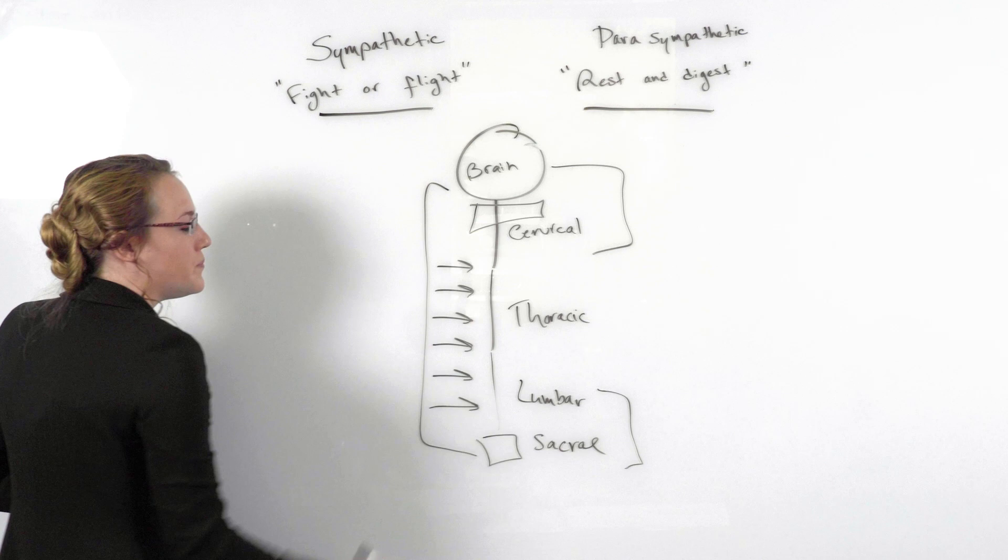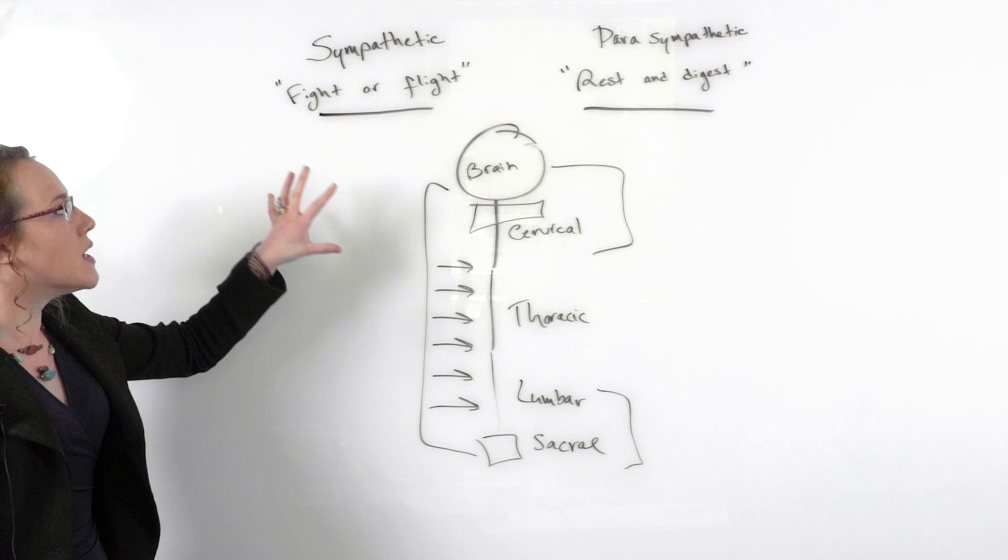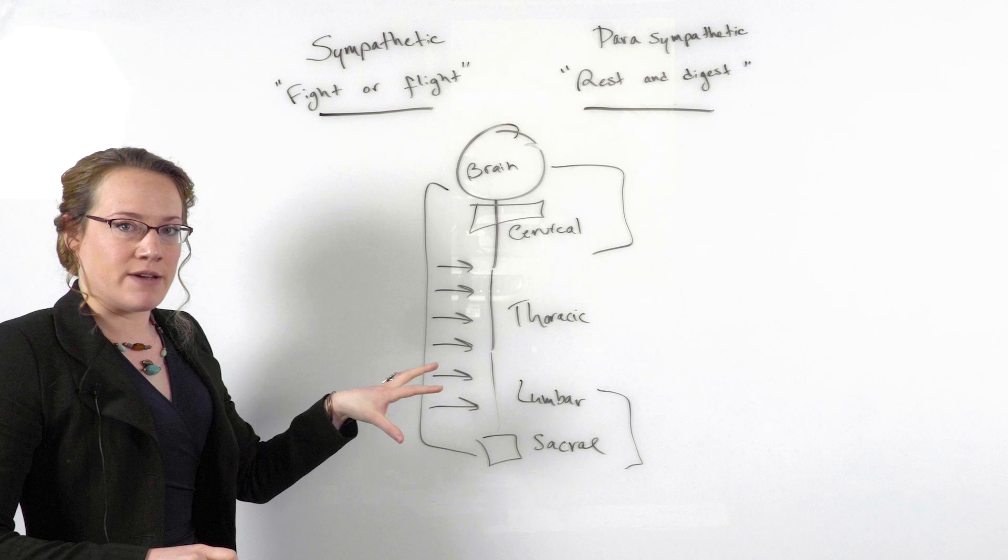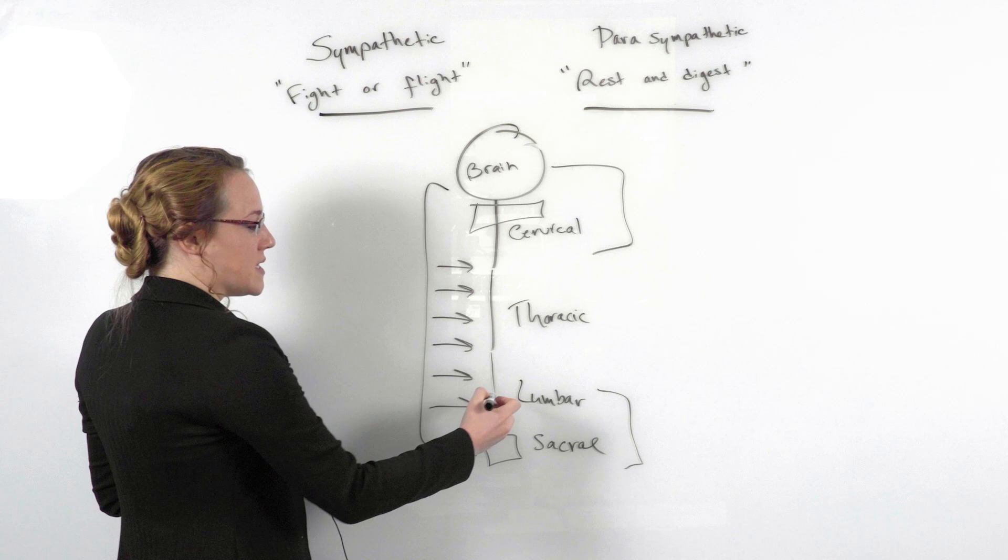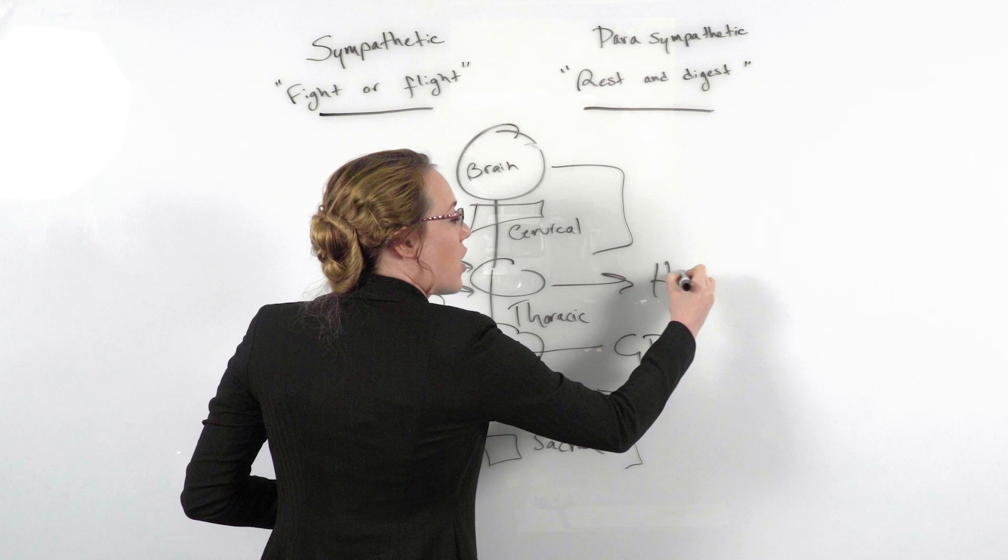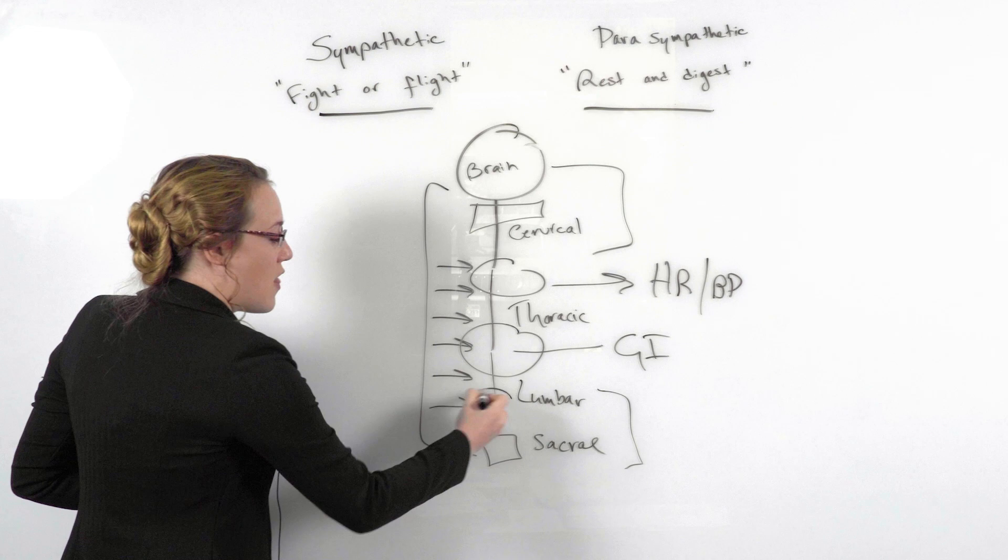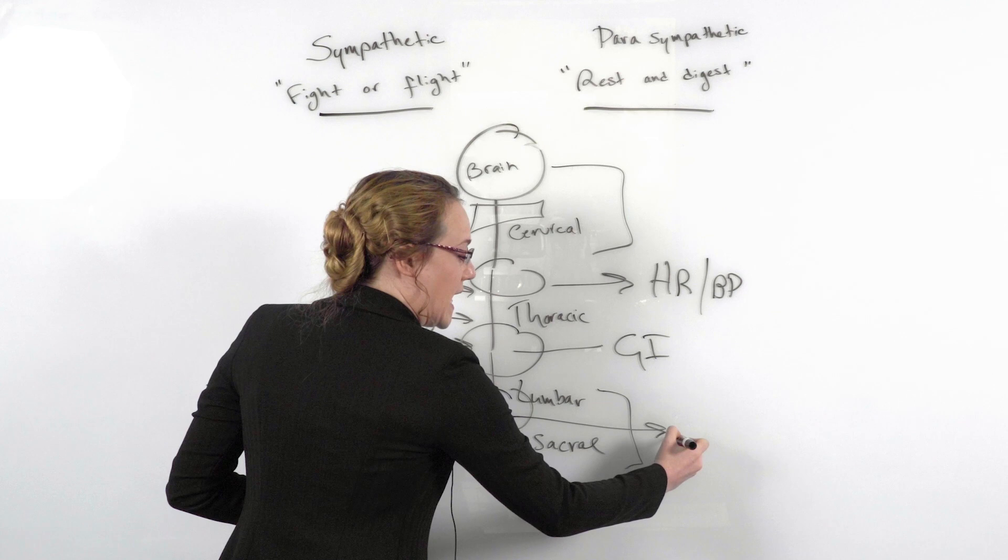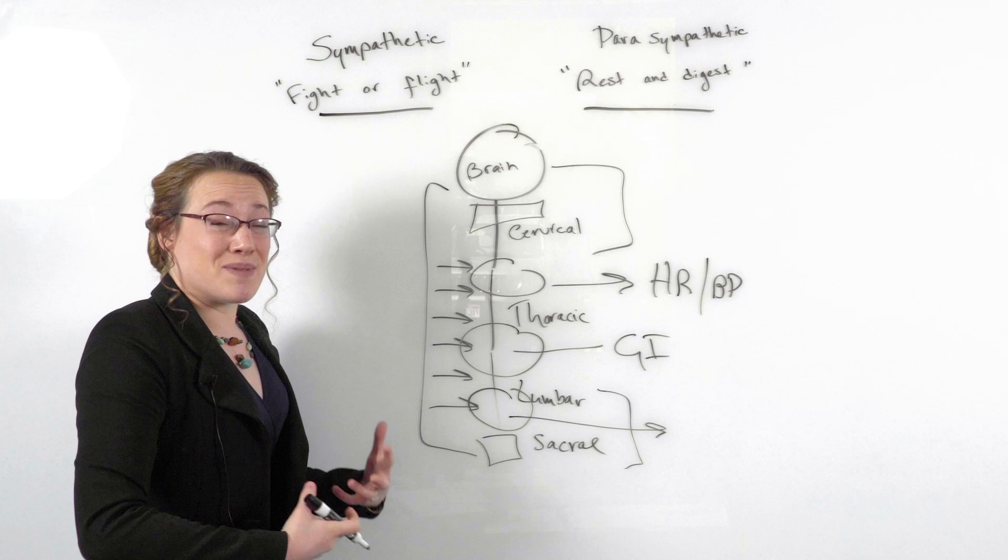Now when we consider this imbalance, this trend towards more sympathetic power, that means that the symptoms that you might experience coming from disruption in the autonomic nervous system will be very unique. Some patients may display symptoms in more of the GI area, or gastrointestinal area, versus other patients may display symptoms that are more related to the heart, so heart rate or blood pressure. Some patients display symptoms that are more related to lower abdomen, including symptoms like diarrhea or constipation, which can be hard to talk about with your doctor.